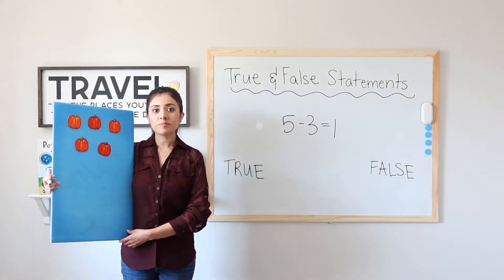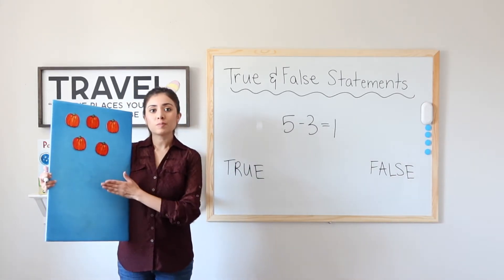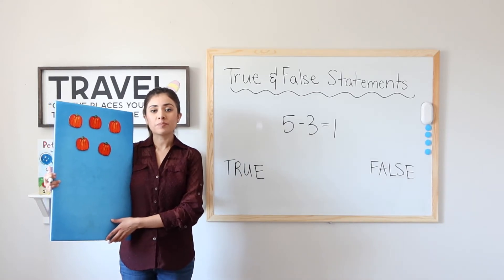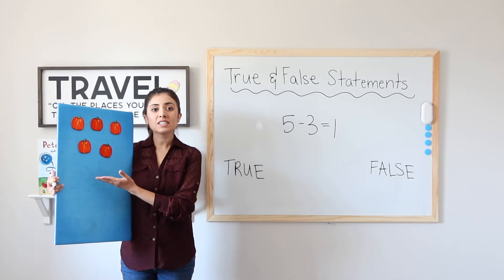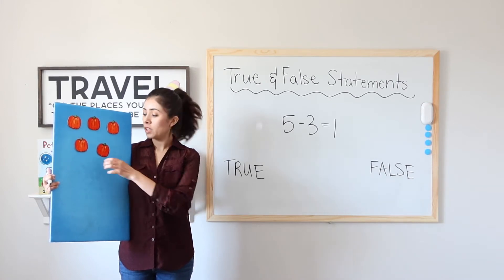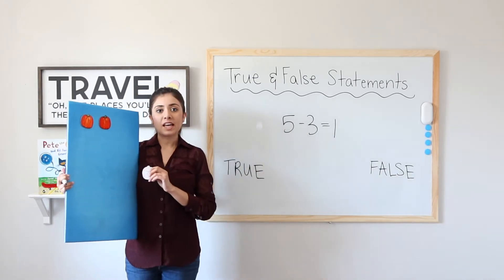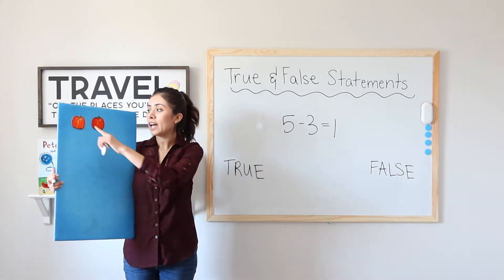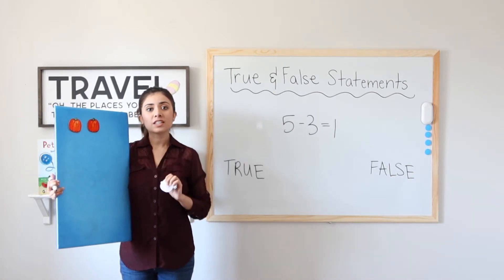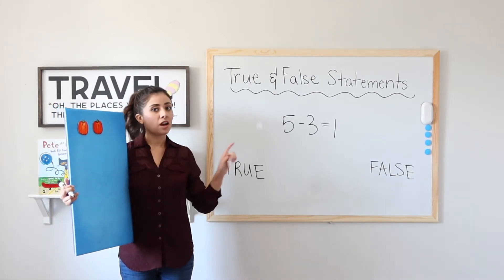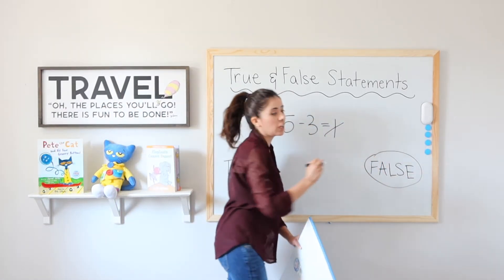Next problem: 5 minus 3 equals 1. Let's use pictures to help solve this. There are 5 pumpkins at the pumpkin patch. I decide to take 3 home — 1, 2, 3. Do I have 1 pumpkin left? No, I have 1, 2. 5 minus 3 equals 2, not 1. So this statement is false.